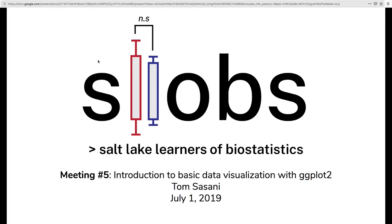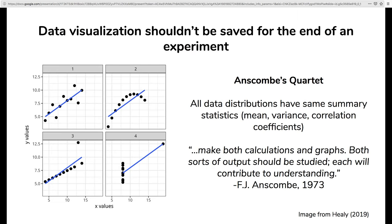Before we get started, just a couple of philosophical points about data viz and plotting in general. The first is one you've probably seen already from Aaron: the example of Anscombe's Quartet. This is a series of four different data distributions, and each has the exact same summary statistics — the same mean, the same variance, the same correlation coefficient. But even though the summary statistics are the same, if you actually plot these data, the distributions are really dramatically different. This is a nice manufactured example of why visualizing your data is so important, and why calculating statistics as well as plotting your data is really crucial to understanding the underlying distributions.